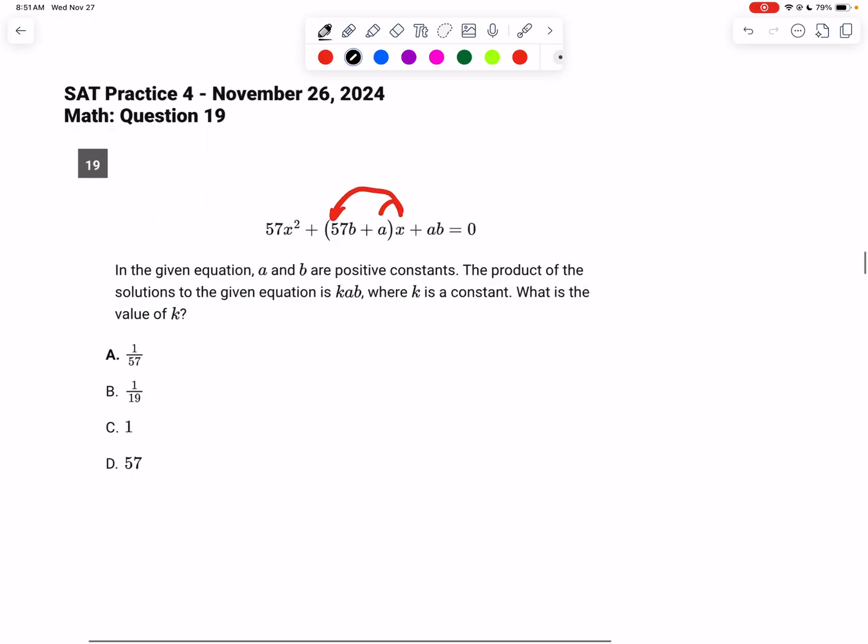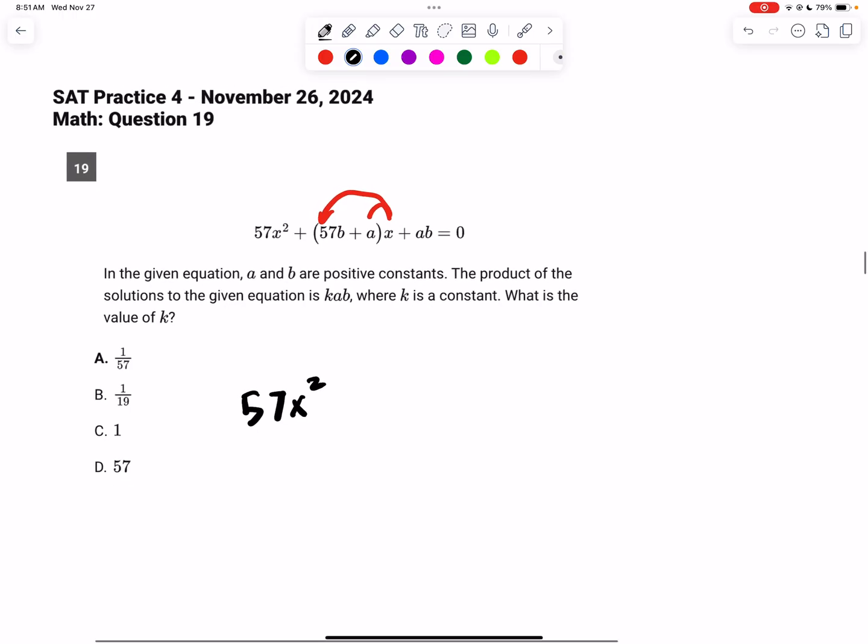So here we have 57x squared, and that was just from what we had before, and then multiplying that first term here, so this by this, we get plus 57b times x, and now multiplying that out, we get plus ax, and then our last term, just rewriting, is plus ab, and that's all equal to 0.